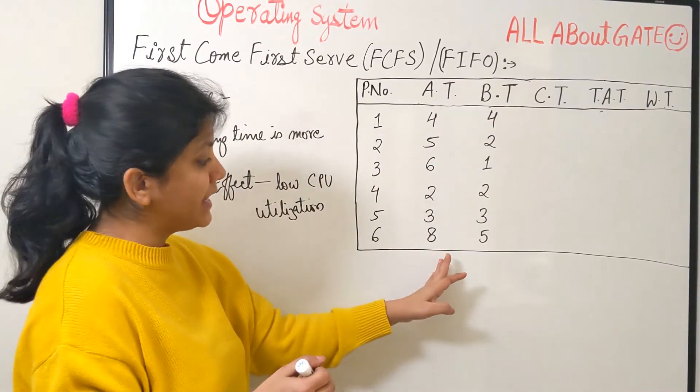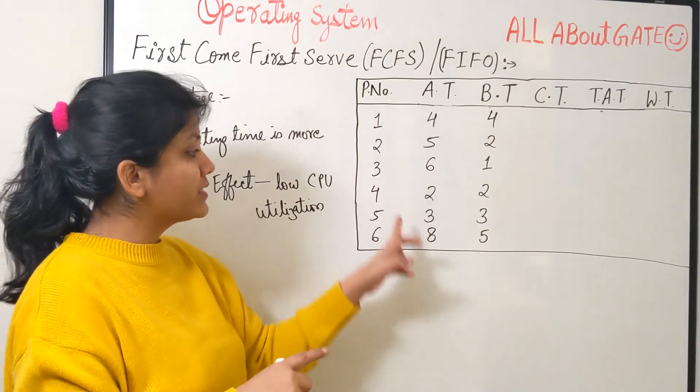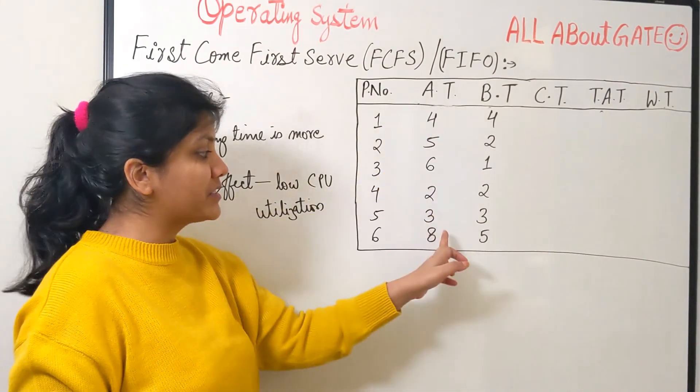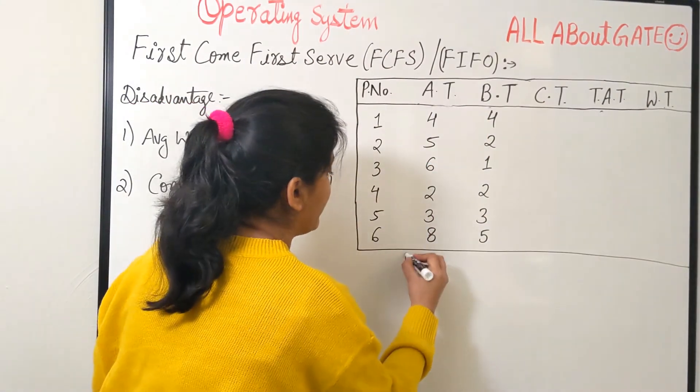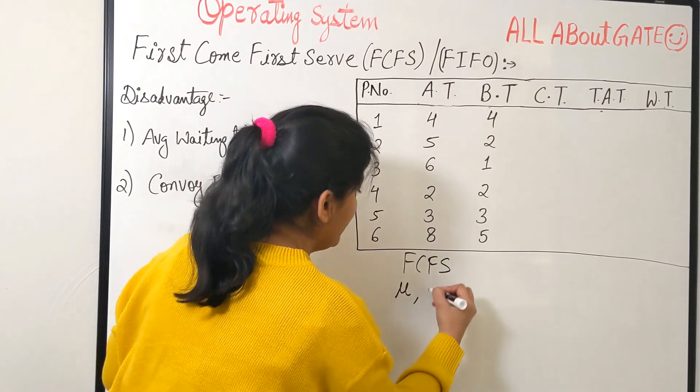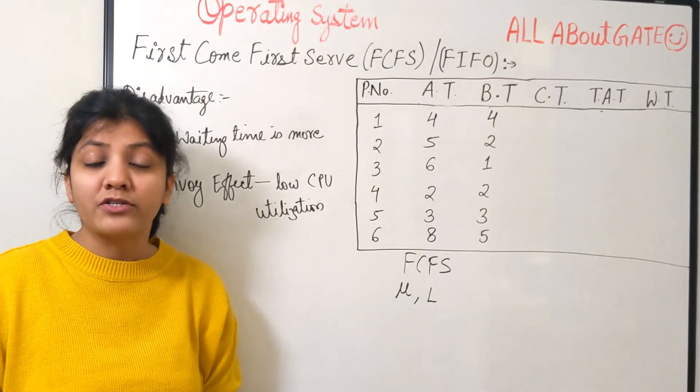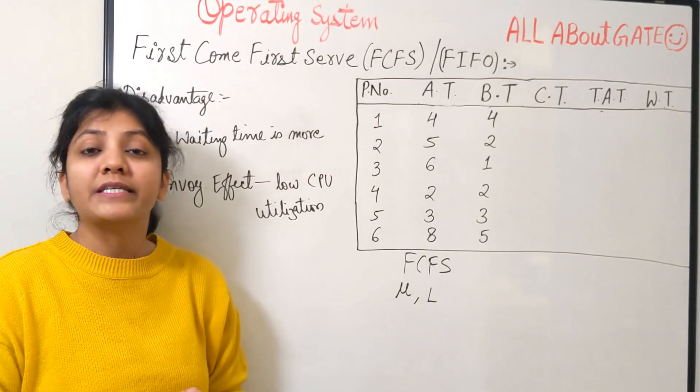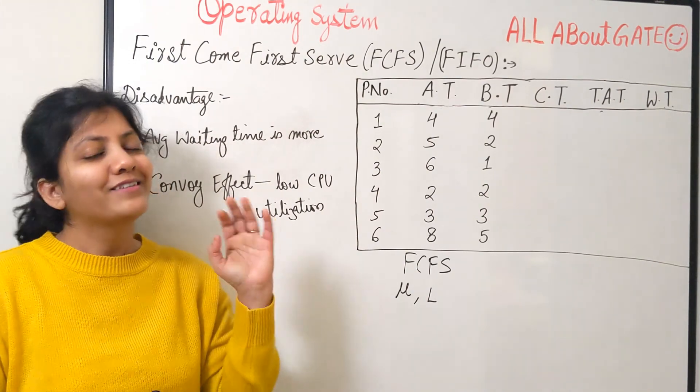Again I have another question right here on the board which I am not going to solve. It is for you to practice. Process number from 1 to 6, their respective arrival time and their respective burst time. Solve it with the help of FCFS. I would like to know the values which you can put down in the comment section and I will see you once again very soon in the next video. Till then bye bye take care.